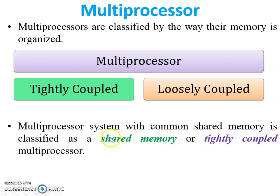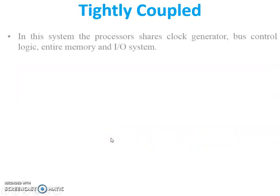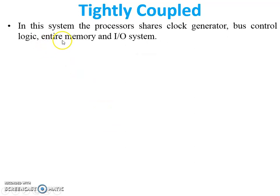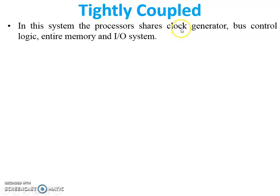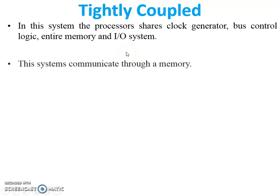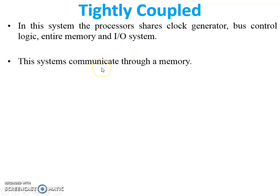In a tightly coupled multiprocessor system, the processors share four things: clock generator, bus control logic, entire memory, and input/output systems. These four components are shared among all processors in the system.